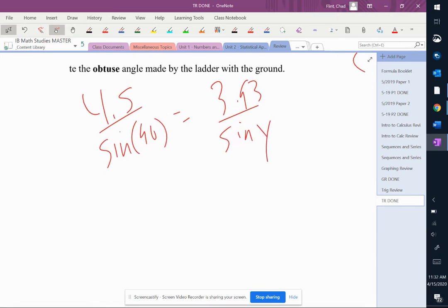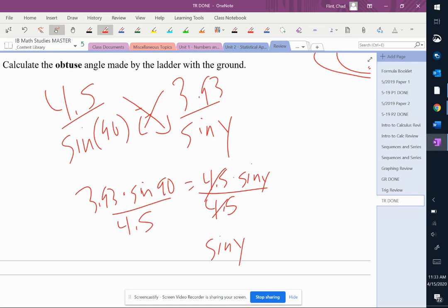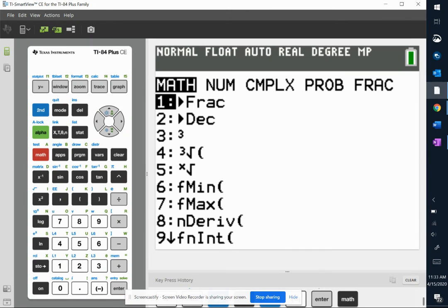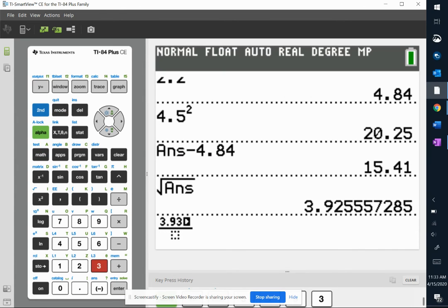So now we're going to have to use inverse sine. So we're going to hit second sine when we get to the end here. We're going to get 3.93 times sine of 90 equals 4.5 times sine of y. I'm going to get rid of that 4.5, so sine of y equals a decimal number.